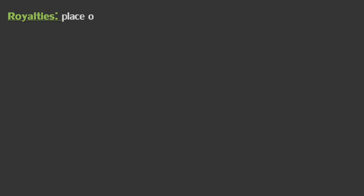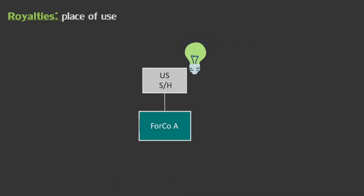Next, we're going to look at royalties, which are sourced based on place of use. Let's assume I have a U.S. company that has IP — intellectual property — in the U.S., maybe associated with a brand name or some sort of know-how. That U.S. company owns 100% of foreign company A organized in Brazil. Foreign company A pays a royalty back to the U.S. annually for the right to use the company brand in Brazil. Since the IP is being used in Brazil, the payment to the U.S. is considered foreign source.